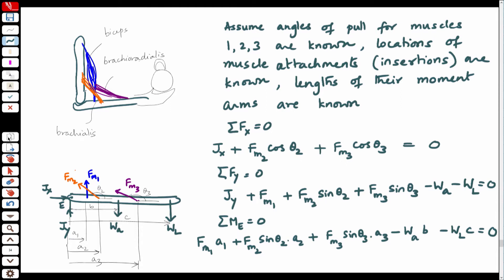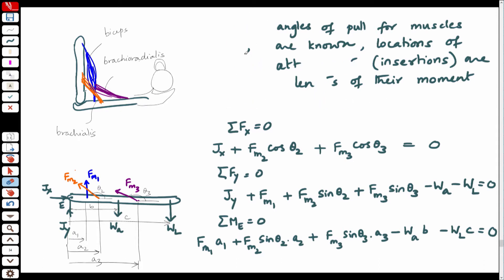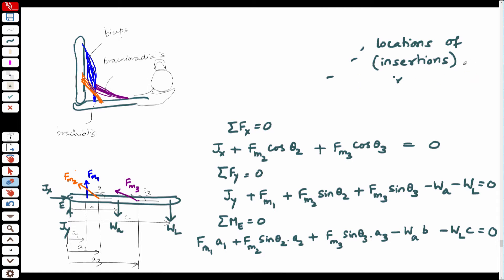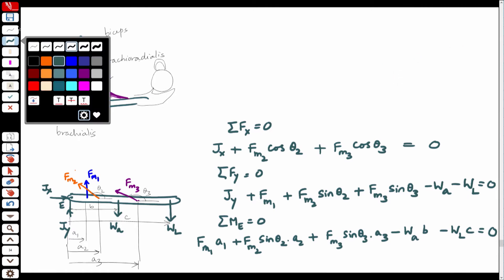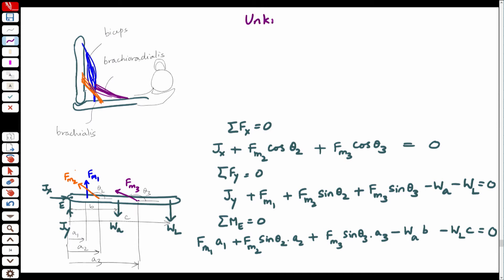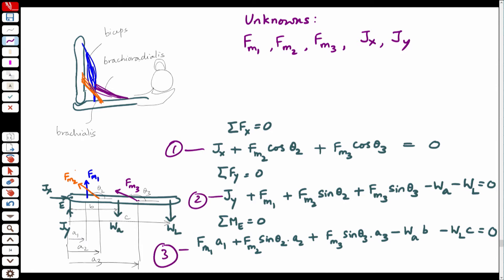If I look at these equations, my unknowns — I do not know the magnitudes of any of the muscle forces. I have 1, 2, 3 unknowns. I have more unknowns than equations, which makes it a statically indeterminate system.